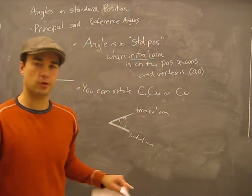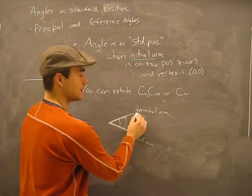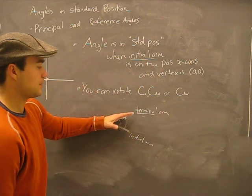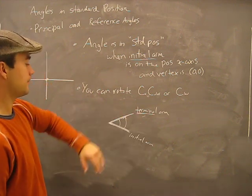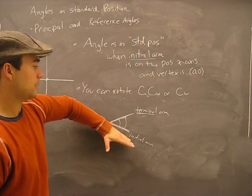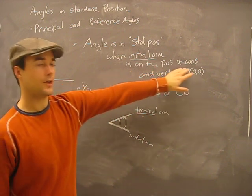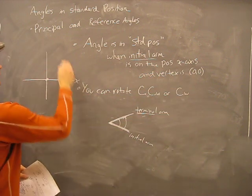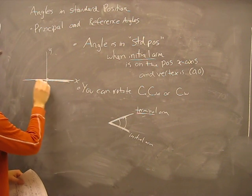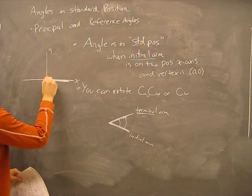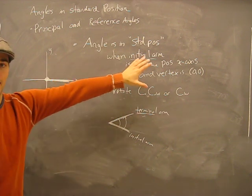I was thinking how do you remember terminal arm — things like terminal cancer, grain terminal. It terminates the angle. When you stop, the growth of the angle is terminated. So here's an angle: initial arm opens up, it stops, that's the terminal arm. Standard position means the initial arm is on the positive x-axis — not the negative side — and the vertex is at zero-zero, which means it hinges there.